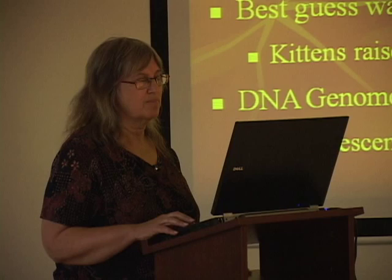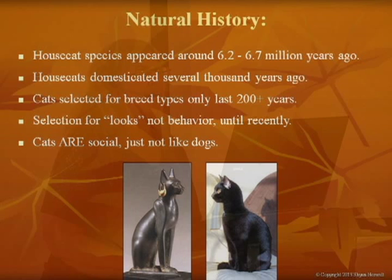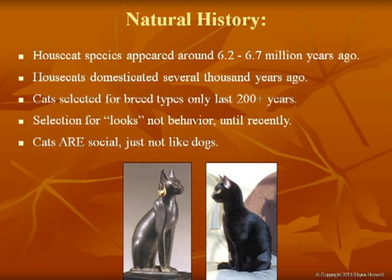We know that house cat species appeared around six to six and a half million years ago — much longer than we believed. They weren't necessarily living in houses at that time, but the genetics were the same. House cats were domesticated several thousand years ago. They've been selectively bred for only around the last 200 to 250 years, and up until recently they were bred for looks and breeds rather than for behavior or temperament.